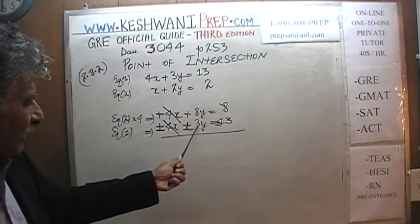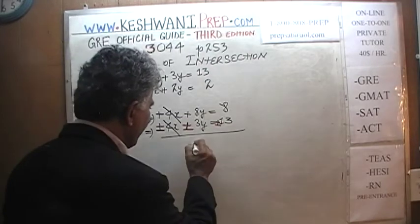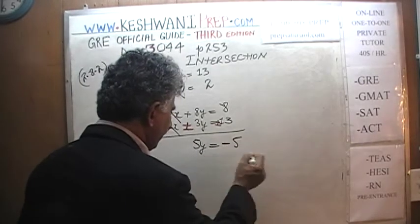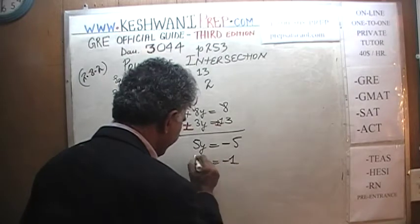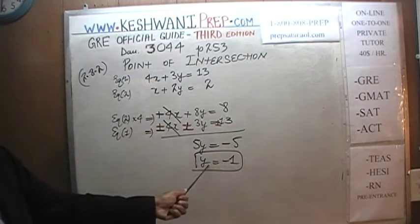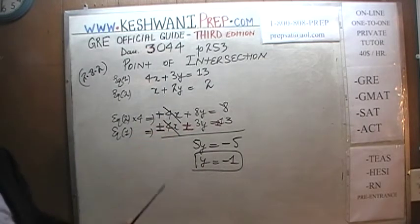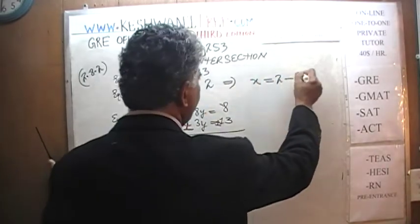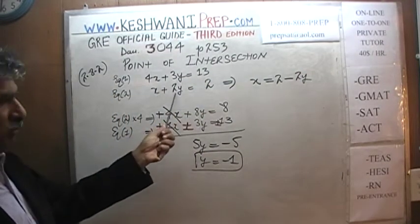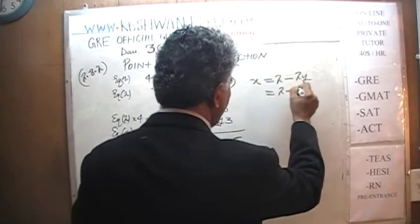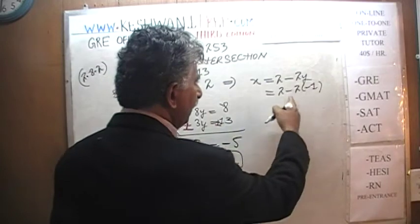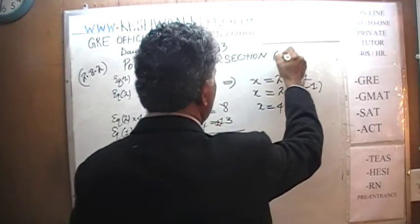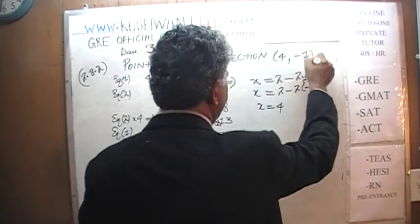This positive 4x and this negative 4x are going to cancel each other — that was the whole point. 8y minus 3y gives us 5y equals 8 minus 13, which is minus 5. Multiply both sides by 5 and y equals negative 1. Very simple, very straightforward. Now we put that value of y into the second equation, since it's simpler. The second equation gives x equals 2 minus 2y. With y equal to negative 1, negative times negative is positive, so x equals 4. The point of intersection is (4, negative 1).